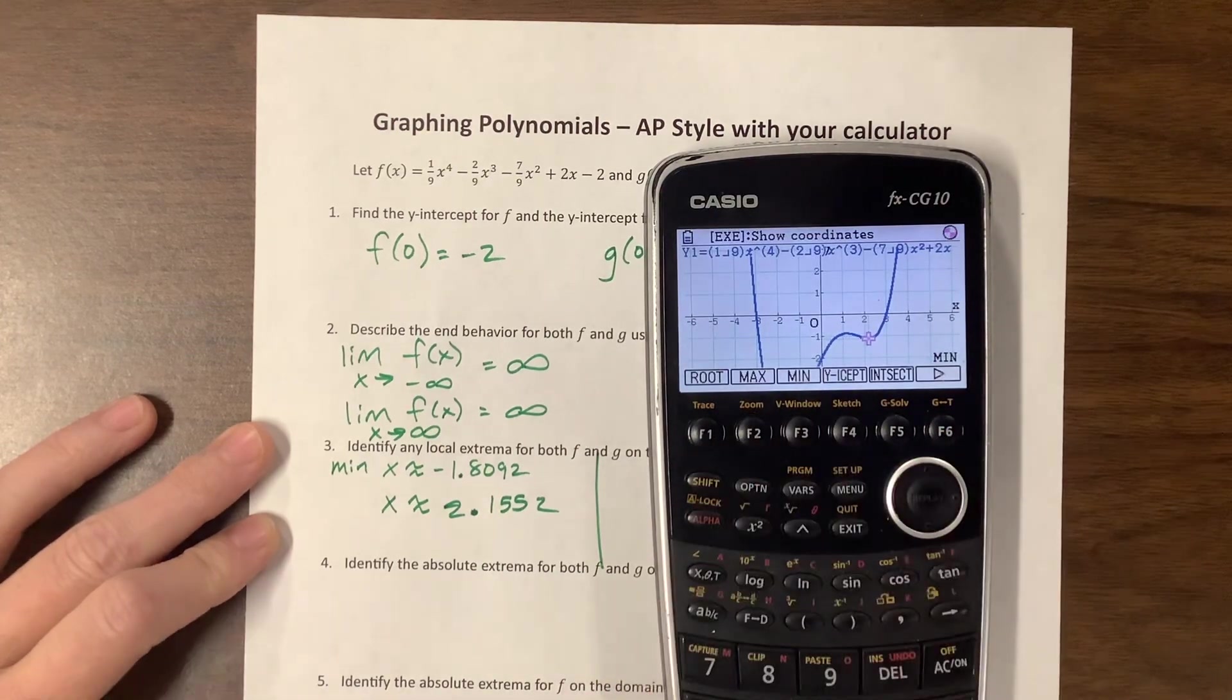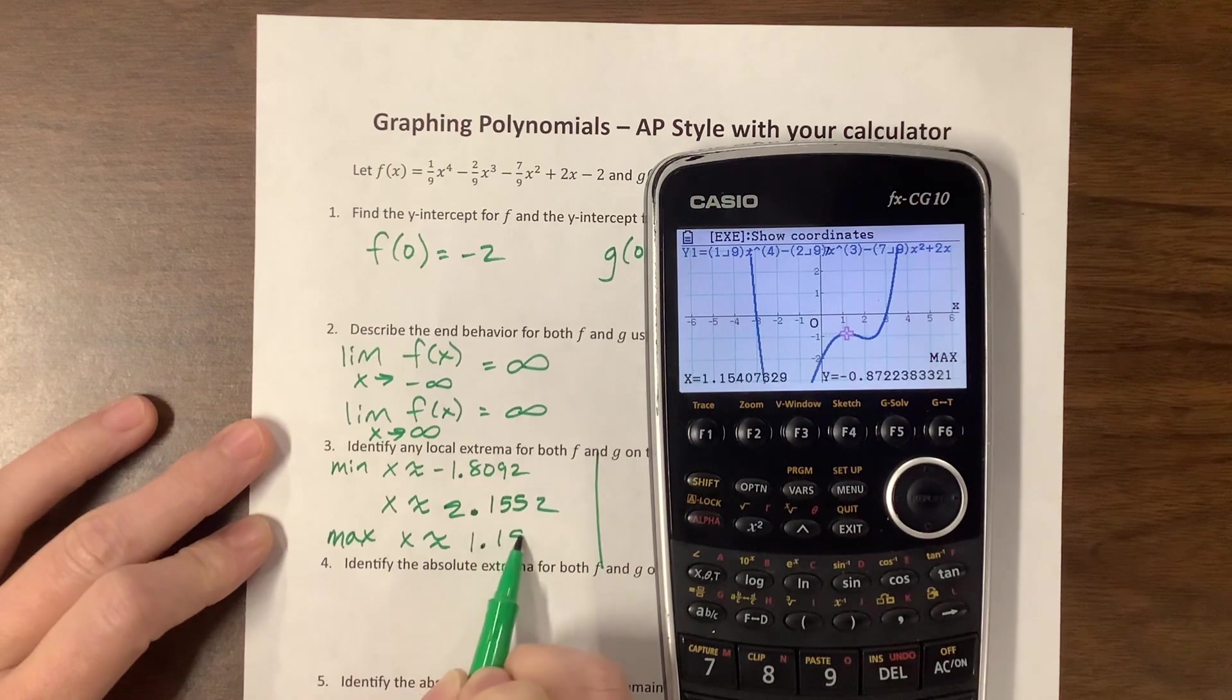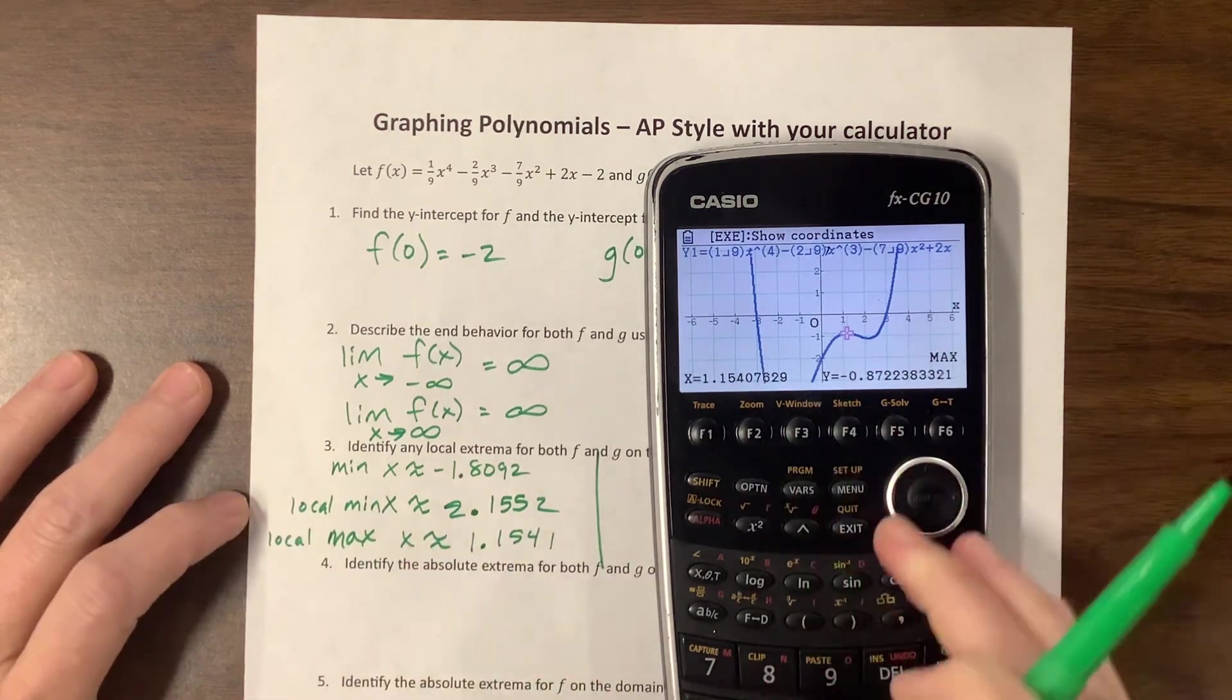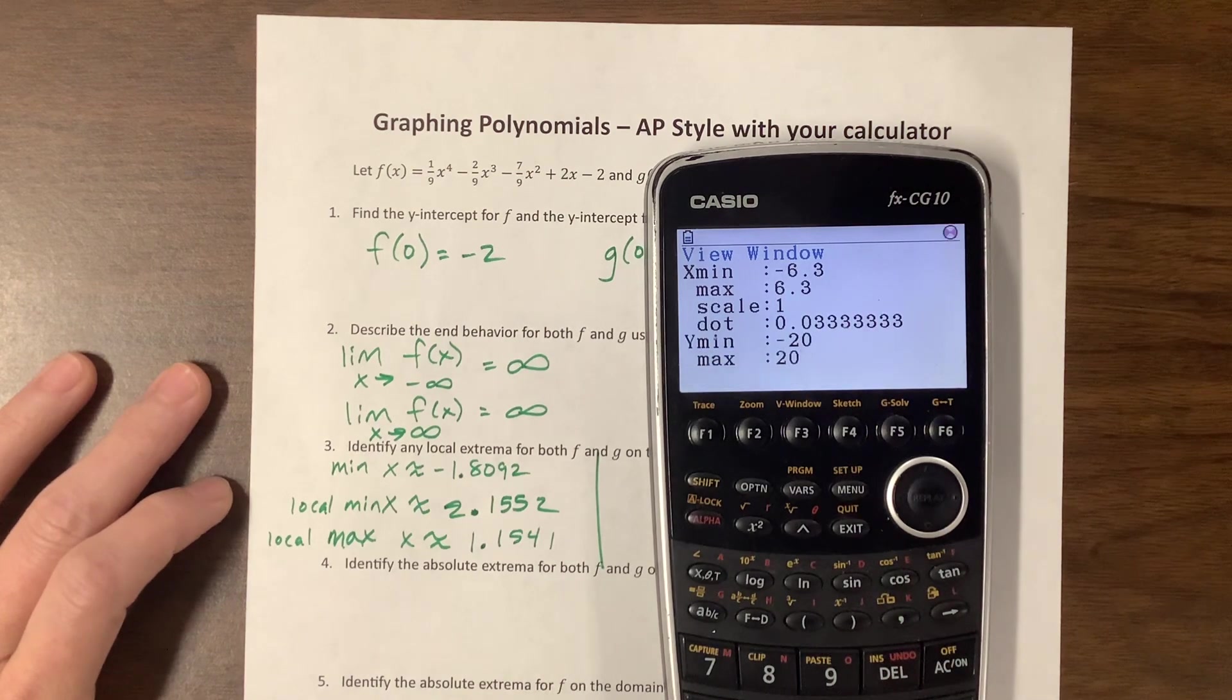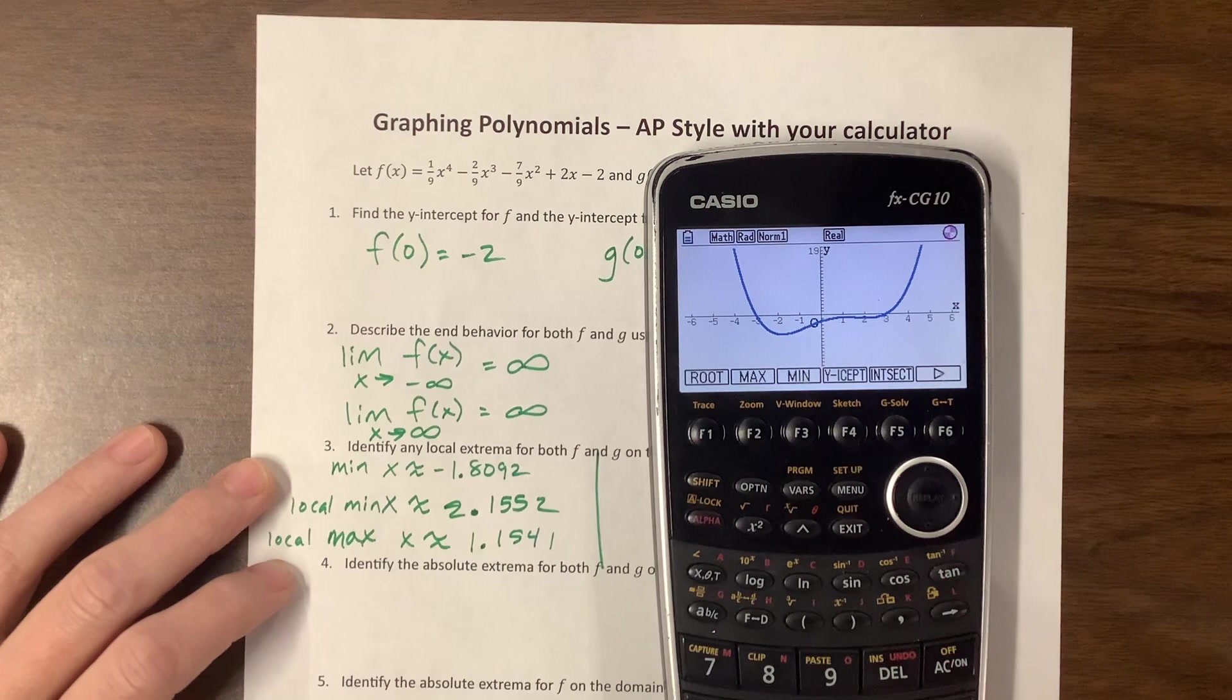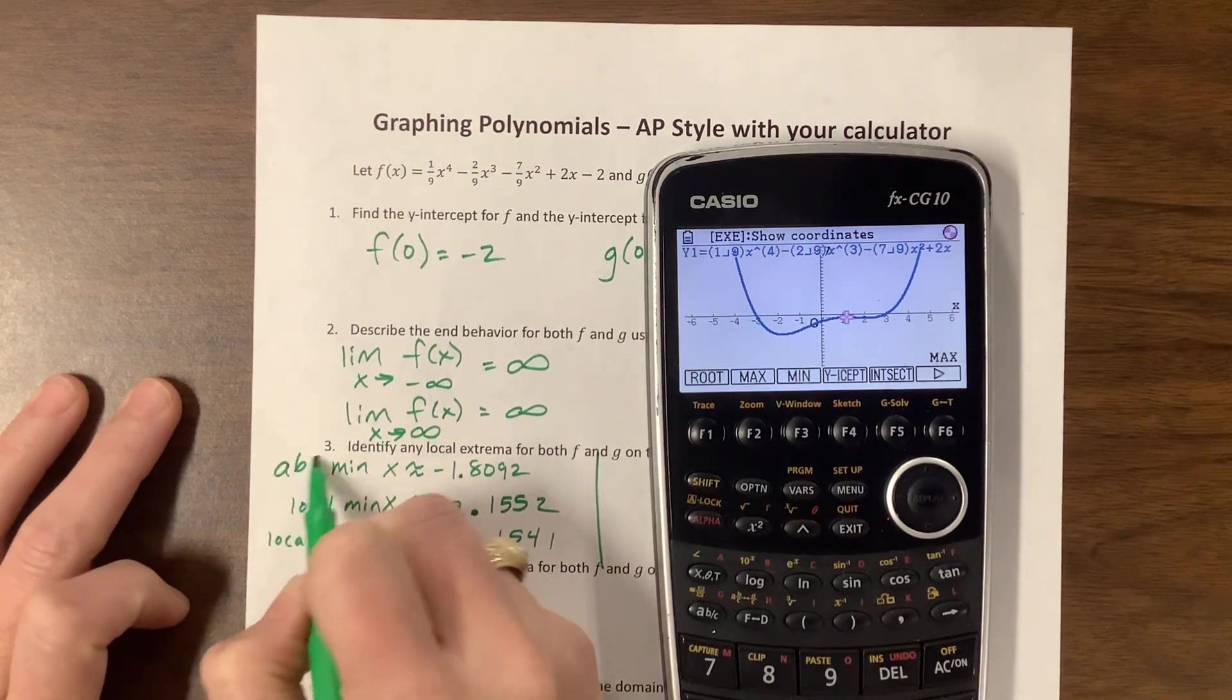AP wants us to round to the third decimal place. My colleague recommends just writing four. They want you either to round to the third or to truncate. And if you write out the fourth, then you don't have to worry about being wrong. It's got a minimum there, and it's also got a local min when x is approximately 2.1552. So I did find a local extrema on the domain. Then we can go g-solve max. So then we have a max when x is approximately 1.1541.